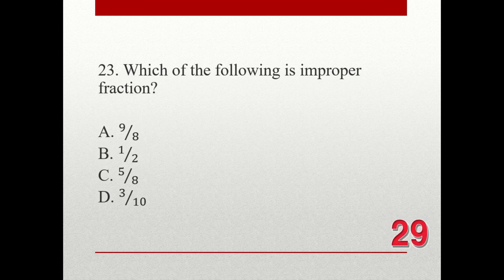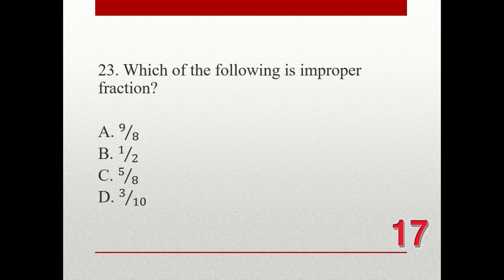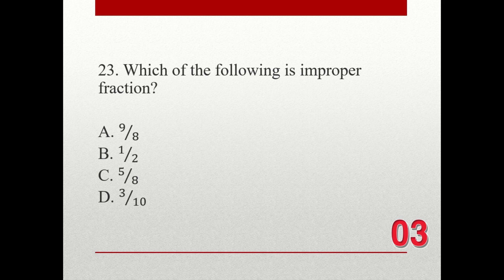Question number 23. Which of the following is an improper fraction? A. 9 over 8. B. 1 half. C. 5 over 8. D. 3 over 10. The correct answer is A. 9 over 8.